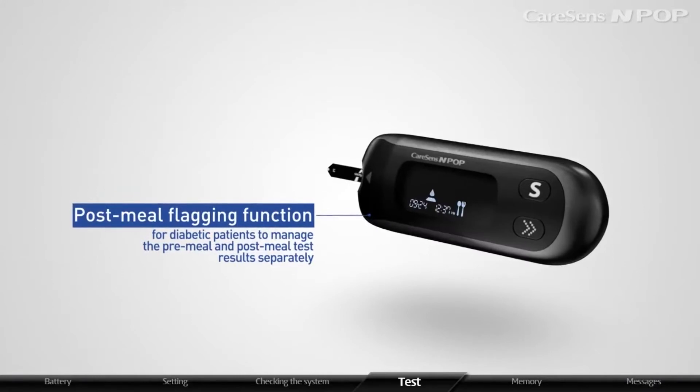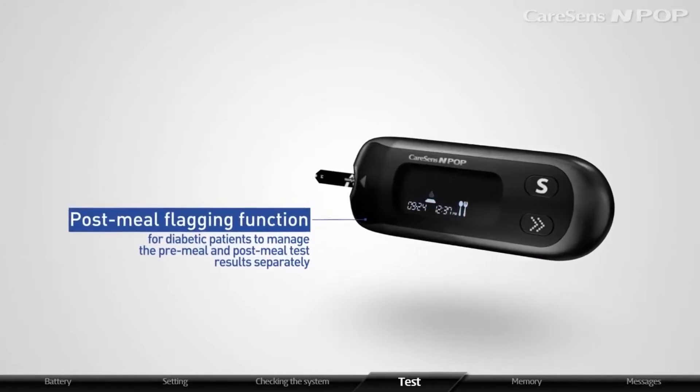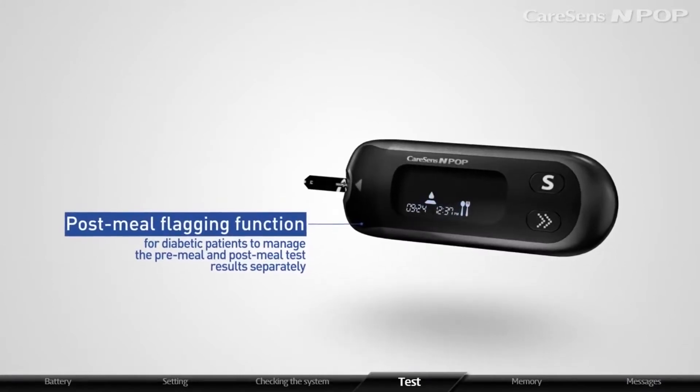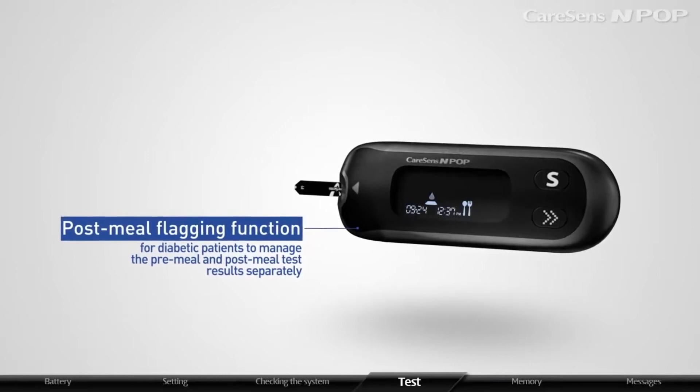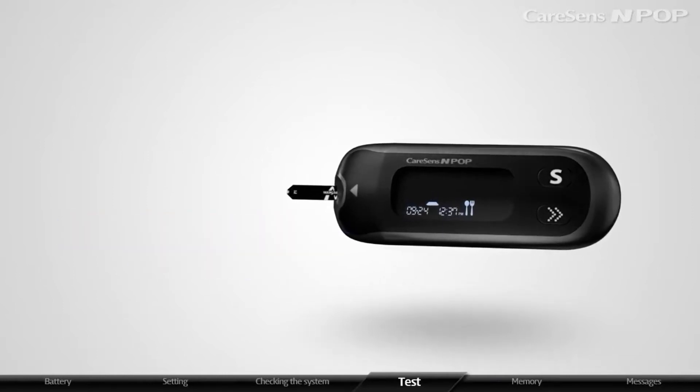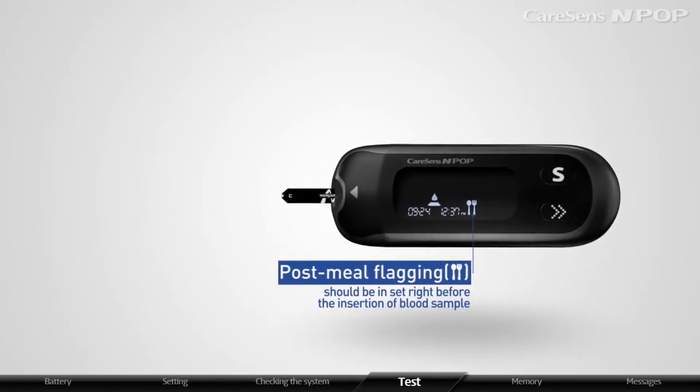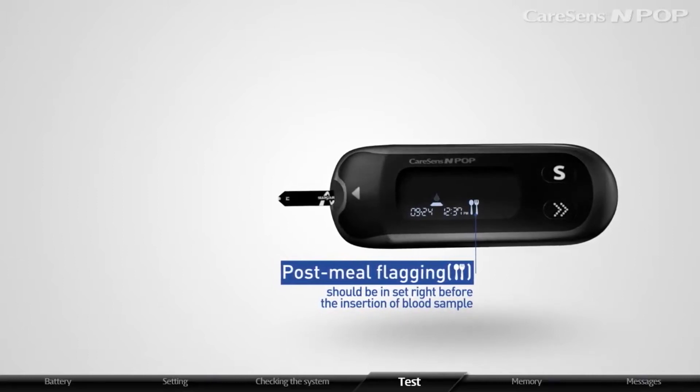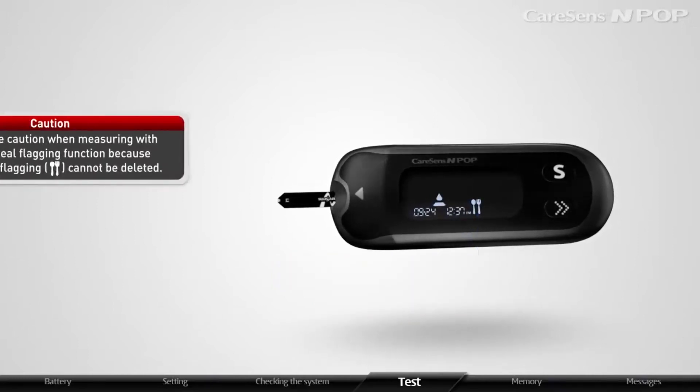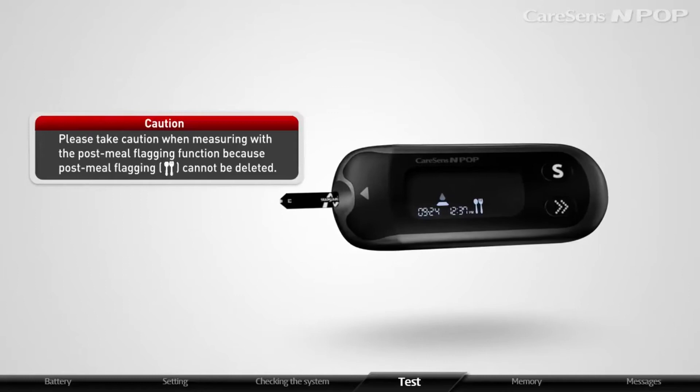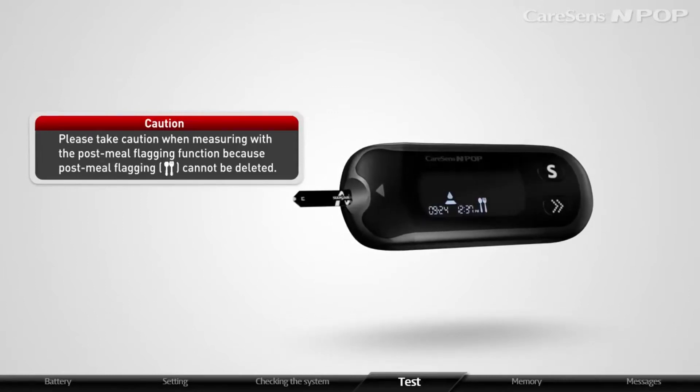CareSense N POP has a post-meal flagging function for diabetic patients to manage the pre-meal and post-meal test results separately. Post-meal flagging should be set right before the insertion of blood sample. Please take caution when measuring with post-meal flagging function because post-meal flagging cannot be deleted.